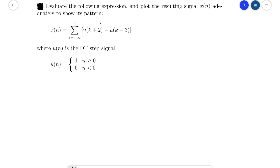Hello everyone. For this lesson, let's talk about how to plot the discrete time singular function. Here is the question: evaluate the following expression and plot the resulting singular x(n) adequately to show its pattern. x(n) equals the sum of k from negative infinity to n of the function u(k+2) minus u(k-3), where u(n) is the discrete time step singular function.